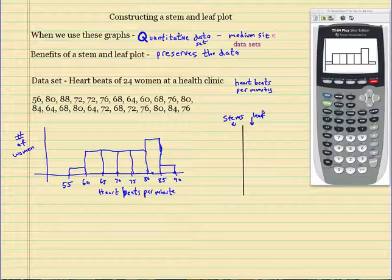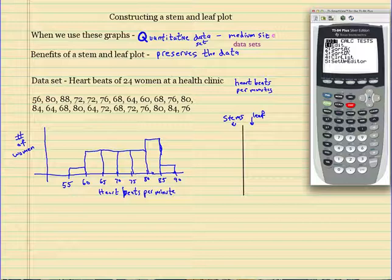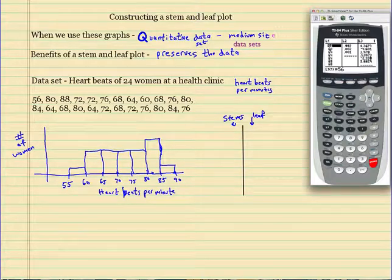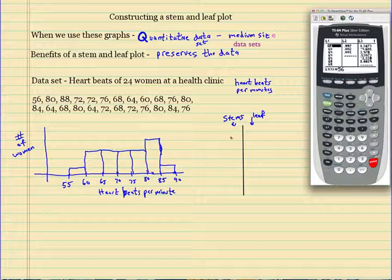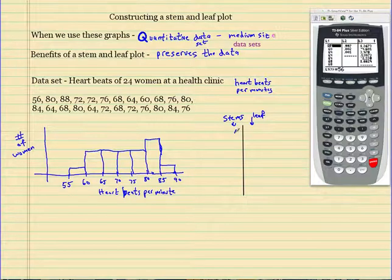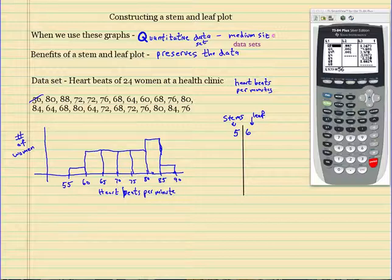What you want to do is start at the smallest value. Here's a trick: I hit Stat and selected Sort A, which sorts the list from smallest to largest, then entered L1. It says done. So when I go back to my list it now starts at 56. The book starts with the highest and goes to the lowest, but I start from the lowest and go to the highest. The lowest number is 56, so the stem is 5 and the leaf is 6. The leaves are the ones digits and the stems are the tens digits. The key would be: 5 | 6 = 56 beats per minute.